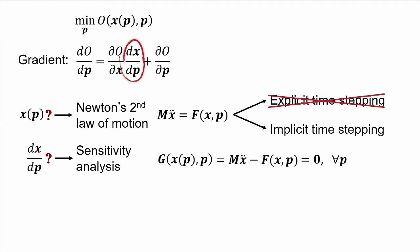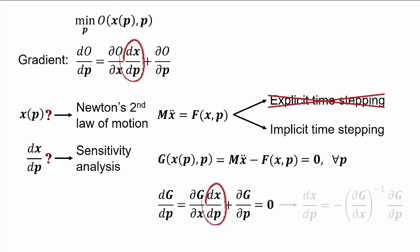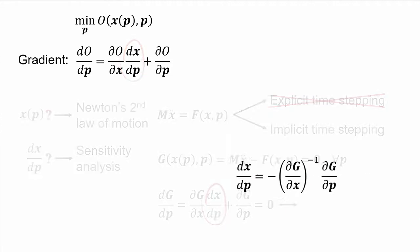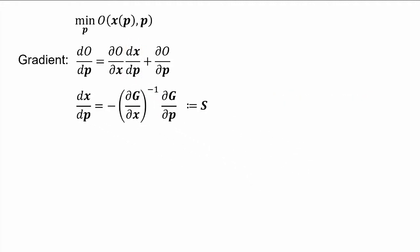Now, the implicit function theorem tells us that if G equals zero for all P, it implies that this must also be true for its total derivative. And by solving this linear system for dX/dP, we end up with an analytic expression for it. This term is also called the sensitivity, since it gives us a notion of how X changes with respect to P.